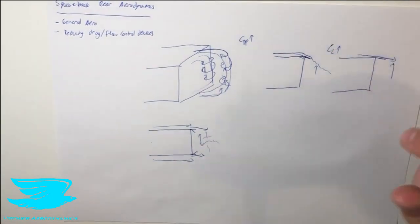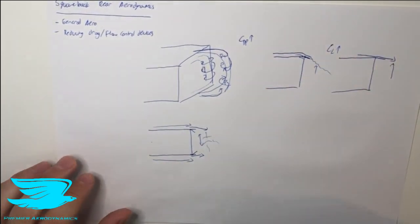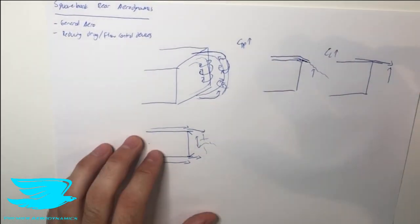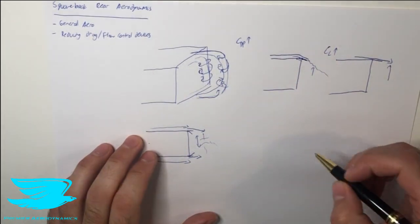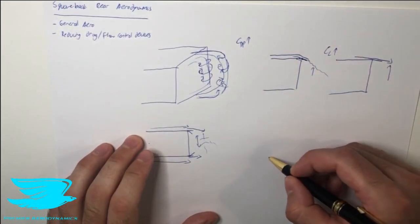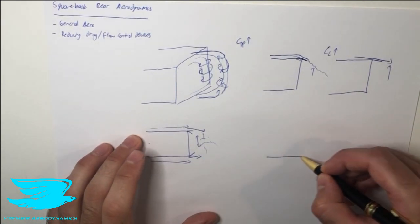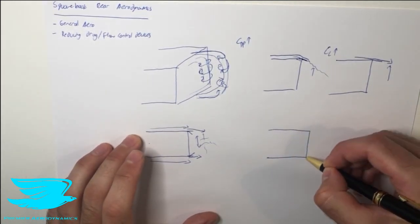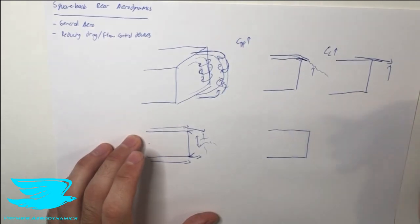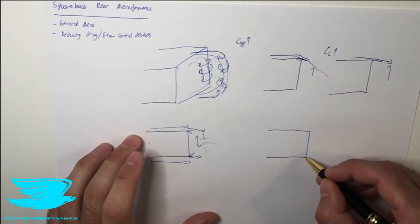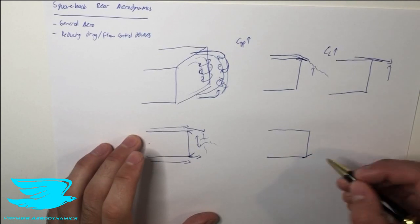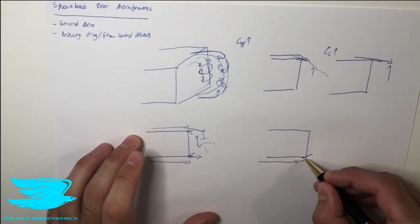That's the second flow control device. The third flow device is the diffuser. So now let's say we're looking from underneath the car, actually we'll go from the side of the car. So instead of, we might have the roof rear spoiler for example, but now we have the diffuser which is now up at an angle. So the flow coming from underneath the car will then follow this diffuser and go upwards.